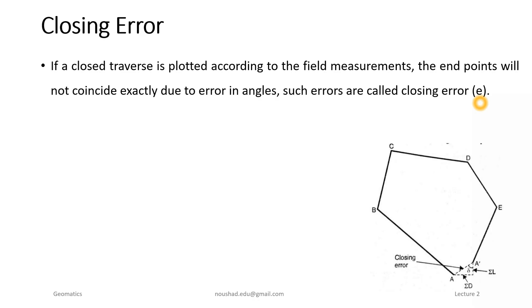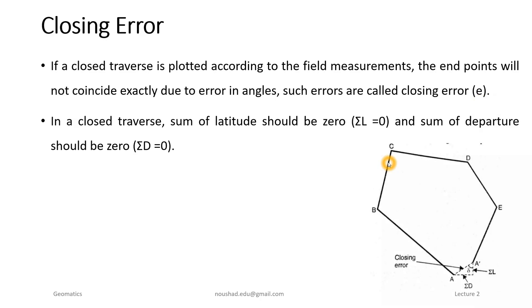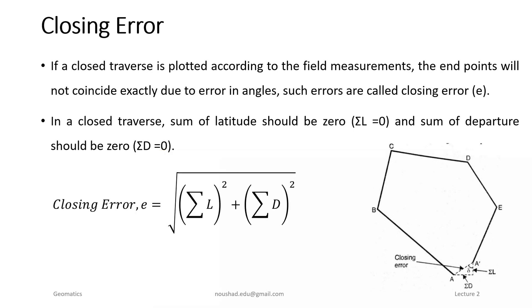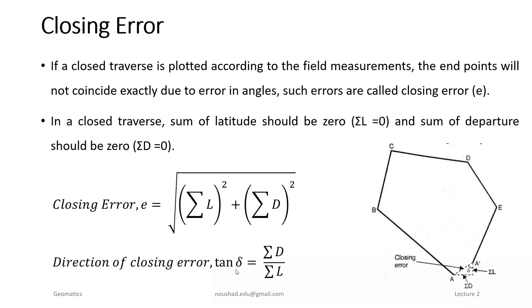The amount of closing error can be calculated based on the concept that the total sum of latitude should be equal to zero and the sum of departure should be equal to zero. The closing error e = √(ΣL² + ΣD²), that is, the root of the sum of latitude squared plus sum of departure squared. The direction of the closing error is given by: tan δ = ΣD / ΣL.